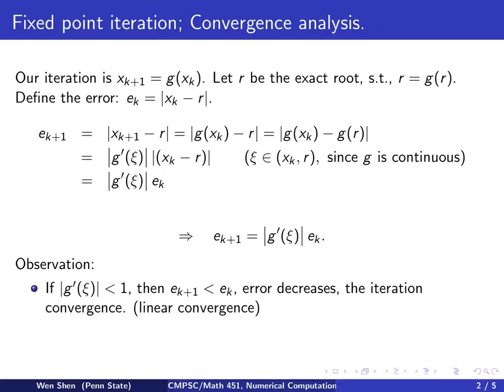So here is the observation. If |g'(ξ)| shall be strictly less than 1 for always, then we know e_{k+1} will be less than e_k. So the error decreases after each iteration.